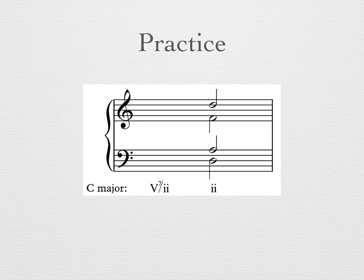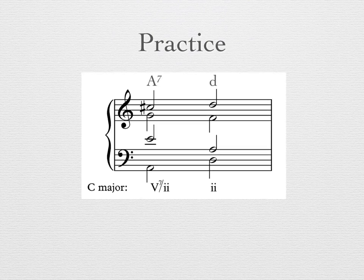Now it's your turn to practice. Spell the secondary dominant of the II chord in the key of C major. Pause the video if you need more time. You should have spelled an A dominant 7, complete with C sharp, resolving to D minor, or II in C major. Be careful that your 7th factor resolves down by step to F.